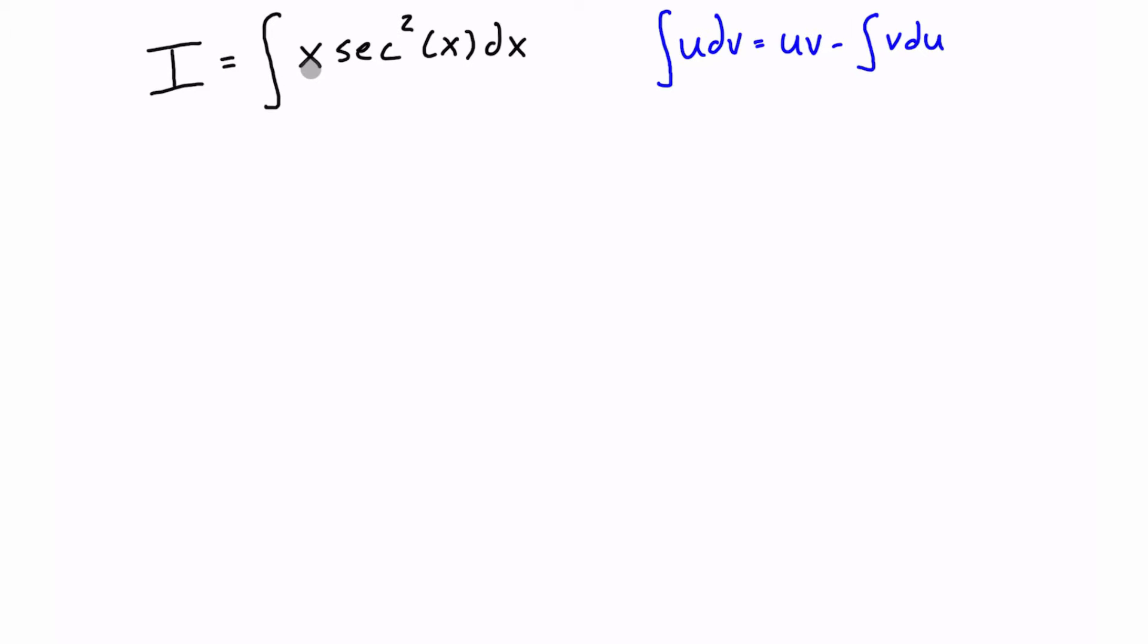Now in this case, we're going to pick x as the part that is easy to derive, and secant squared of x as the part that is easy to integrate, because we can find it in our integral table.